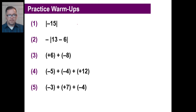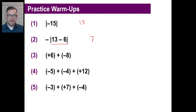Okay, let's answer these. The absolute value of negative 15 — how far away is negative 15 from zero? It's 15. All right, now let's talk about the opposite of this. 13 minus 6 is 7, the absolute value of 7 is 7. The opposite of that, however, is negative 7.